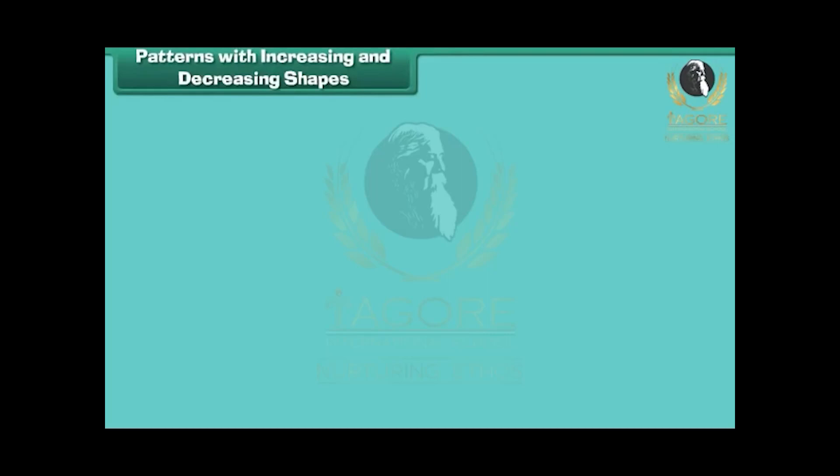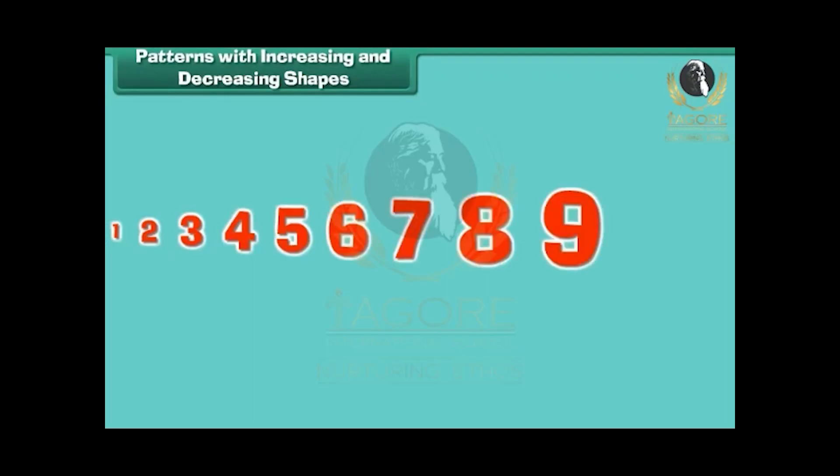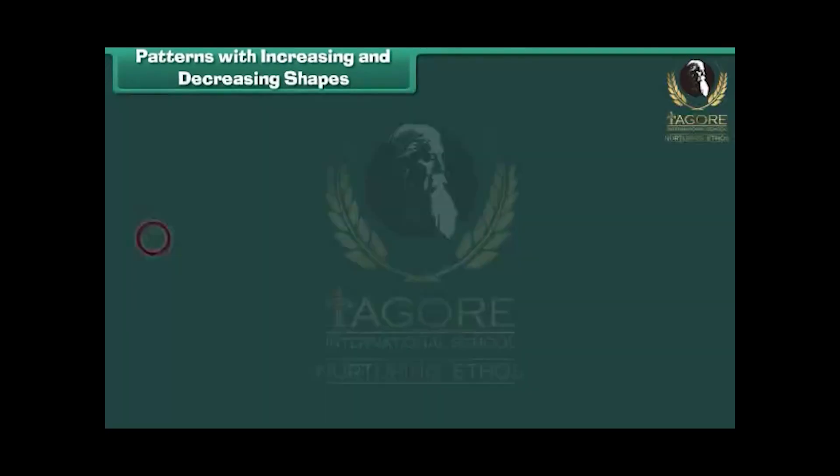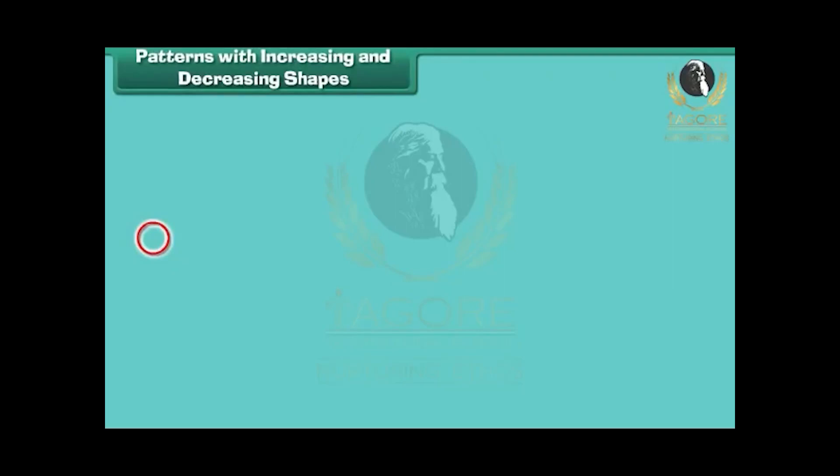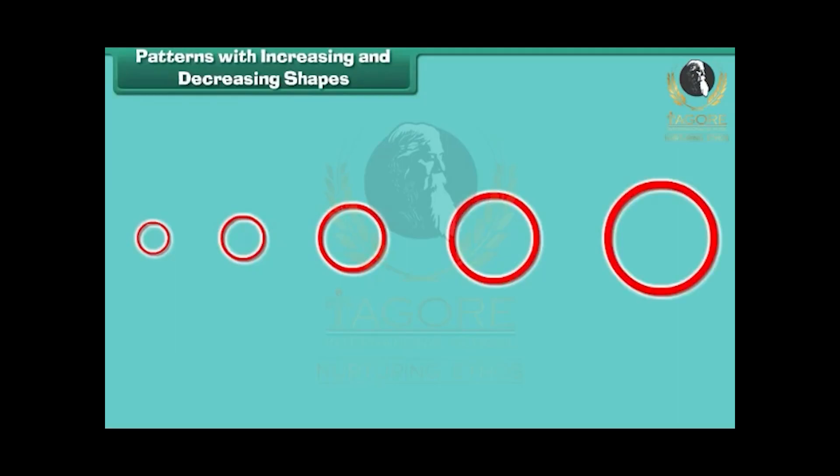Patterns with increasing and decreasing shapes. We can form patterns by increasing and decreasing the number or size of shapes. Let us see how. Look at this arrangement of shapes. One circle followed by two circles followed by three circles and so on. This is a pattern because the circles increase in a definite order.